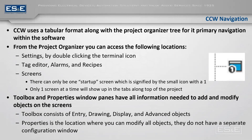The next two window panes that are very important for CCW are the toolbox and the properties. The toolbox has all the different tools you can use to program and animate for the PanelView 800. It has entry objects, drawing objects, display objects, and advanced objects. Commonly in Machine Edition, you would double-click an object and it would open its own properties window. Whereas in CCW, when you drag and drop an object from the toolbox, you use the properties window pane to modify all the objects — they do not have their own separate configuration window.